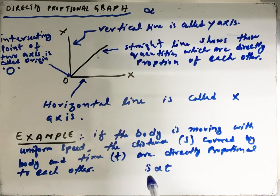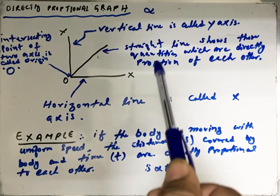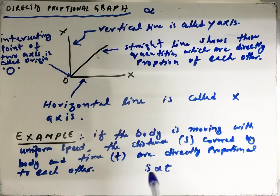The symbol for direct proportion is like this: s is directly proportional to t, where s represents distance and is directly proportional to the time.